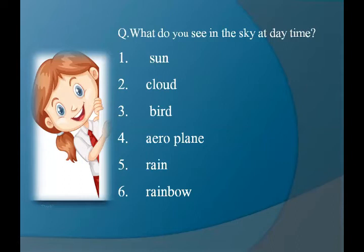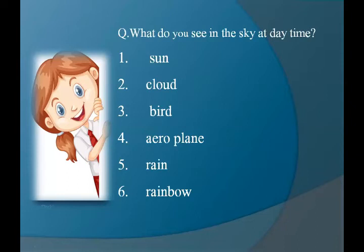The third thing is birds. The spelling of bird is B-I-R-D, bird. We see birds in the sky at daytime. They have wings to fly and they also have claws.